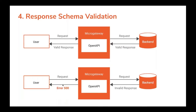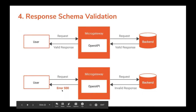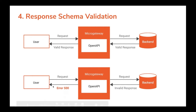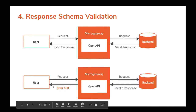In the response path, if the backend sends a valid response that response is passed through to the client. If it sends an invalid response, error 500 is sent to the client.